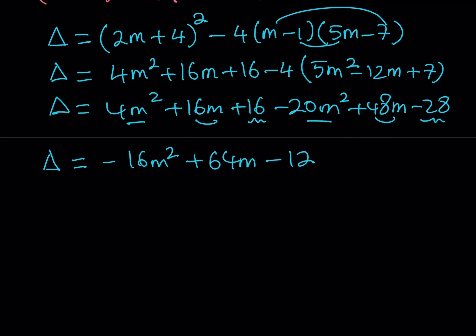Now let's simplify this a little bit more. I can take out a common factor. In this case, that will be a negative 4. And I want to keep the m squared positive. So negative 4 would be a good one. And this gives me inside the parentheses 4m squared minus 16m plus 3.